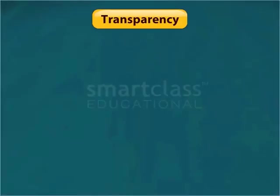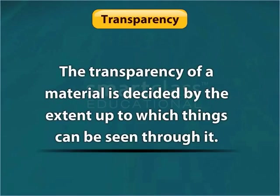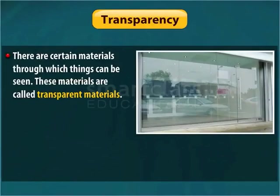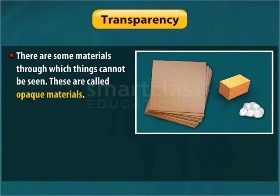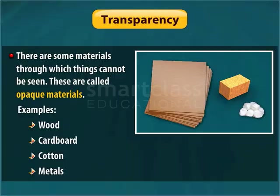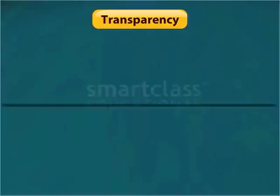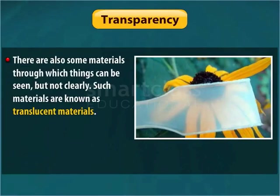The last property is transparency. The transparency of a material is decided by the extent to which things can be seen through it. There are certain materials through which things can be seen. These materials are called transparent materials. Examples are glass, water, air and some plastics. On the other hand, there are some materials through which things cannot be seen. These are called opaque materials. Examples are wood, cardboard, cotton and metals. There are also some materials through which things can be seen but not clearly. Such materials are known as translucent materials. Examples are oiled paper and some plastics.